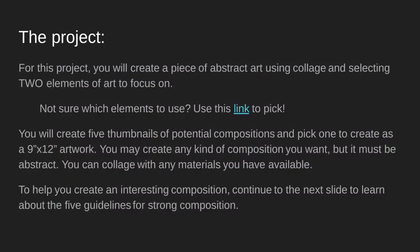For this project, you will be creating a piece of abstract art using collage and selecting two elements of art to focus on. Collage is a type of artwork where you take pieces of paper — from magazines, construction paper, advertisements, or even cut-up homework — and glue them together to form a new image. If you're not sure what element to use, there's a link to a wheel you can spin to get an element. Your first step is to create five thumbnail sketches of potential compositions, then pick one to create as a 9 by 12 artwork. It has to be abstract — no pictures of pets!